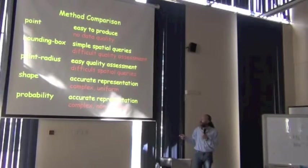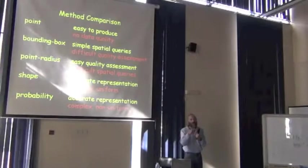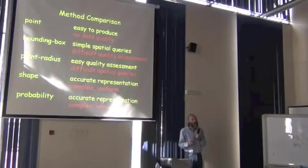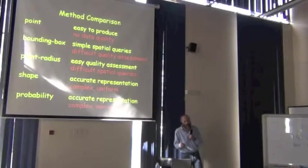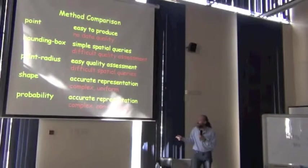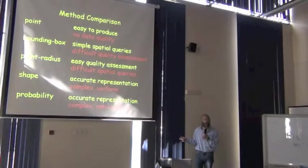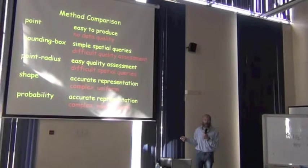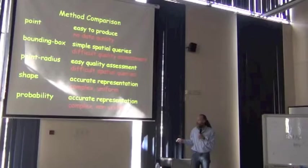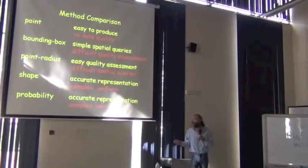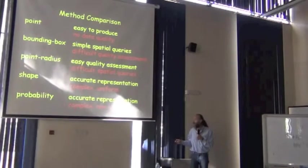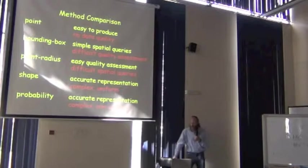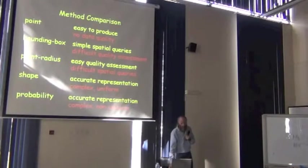Finally, the other thing about the shape method is that the probability is determined to be uniform everywhere inside the geometry. It's just the shape, it doesn't say what the probability is inside that shape. The difference then with the probability method is that it's non-uniform. The probabilities are different across the whole space where there's a non-zero probability of occurrence. But again, it's quite complicated. We're talking about rasters and GIS systems in order to be able to do an analysis of this. So that's the rundown of the comparison of the methods.